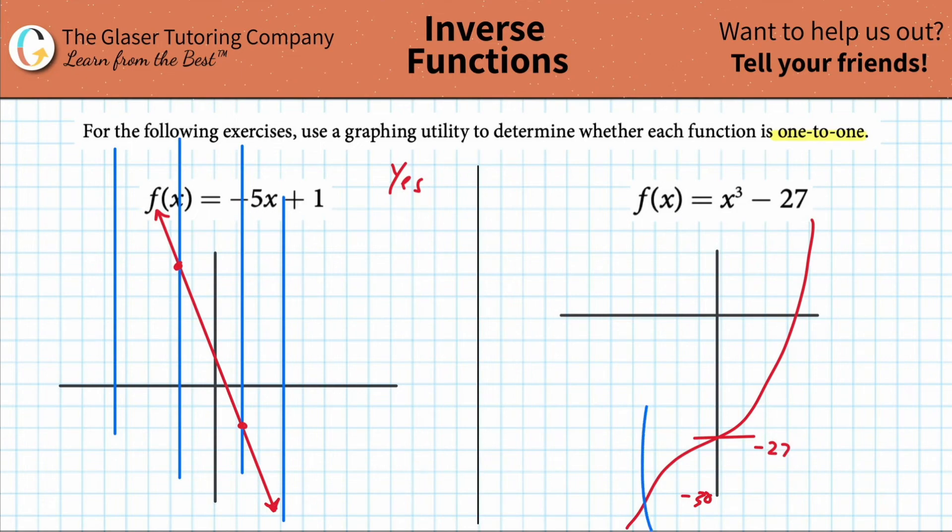And again, you're going to draw those vertical lines, but what do you even notice already? What do you notice? Those vertical lines are only going to intersect the graph in one unique spot. So yes, it is a one-to-one function.